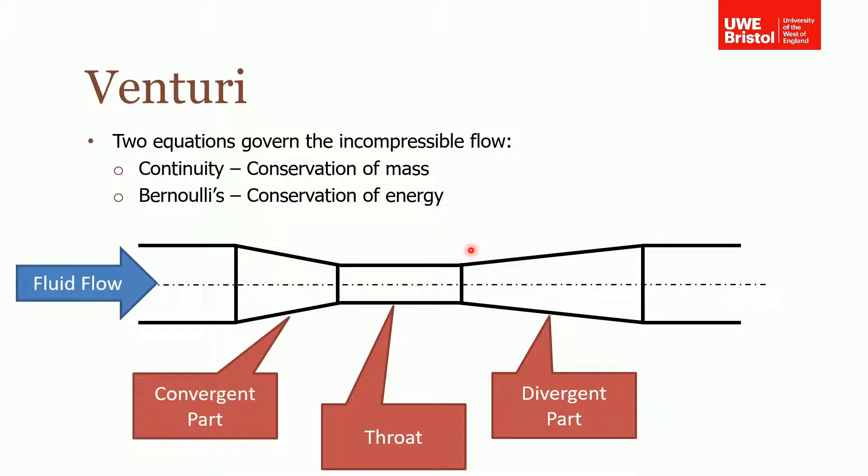And hopefully you can notice from the way that's been drawn that the divergent part here is actually longer than the convergent part here. And the reason for that is that when you diverge fluid, if you do it too aggressively or too abruptly, then you'll get eddies that will form and this will create pressure losses in your meter, which obviously means it won't be as effective. You don't have quite the same problem in convergence. Obviously you still don't want to converge it too aggressively, but it's more of an issue in terms of the divergent section. That's why these sections tend to be longer.